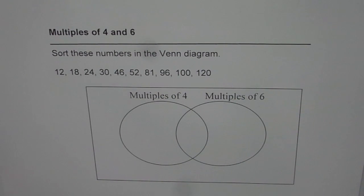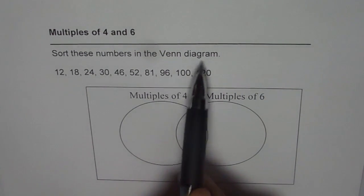I'm Anil Kumar and I hope you can do this question on your own. We are looking for multiples of 4 and 6, and the question is: sort these numbers in the Venn diagram.